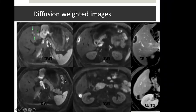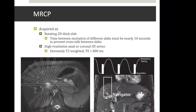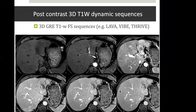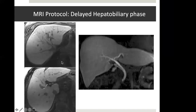MRCP can be added when required, especially in cases of cholangiocarcinoma or tumors causing biliary obstruction. It can be done in a 2D mode with a single-shot breath-hold MRCP or a 3D navigator-based technique imaging the entire slab, which can be reconstructed in other planes. The post-contrast images are the favorite sequences of radiation oncology. In MRI, we have the luxury of acquiring two arterial phases: early arterial for vascular anatomy and late arterial for actual tumor enhancement, followed by the portal phase and multiple hepatic venous phases.